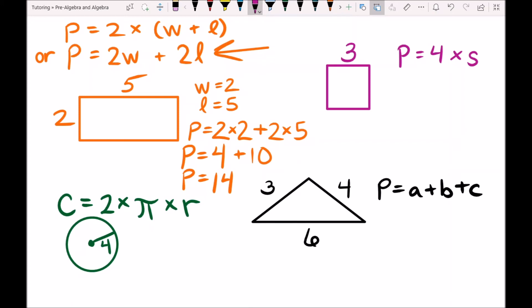For our square we have a side length that is equal to 3, and we have 4 sides that are equal to 3. So our perimeter is equal to 4 times the side length which is 3. So the perimeter of our square is 4 times 3 which is 12.